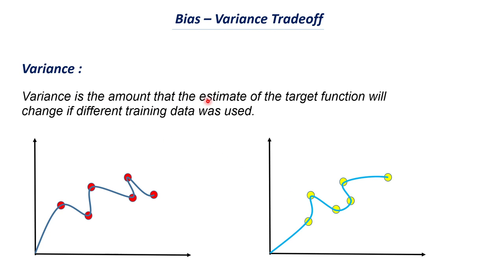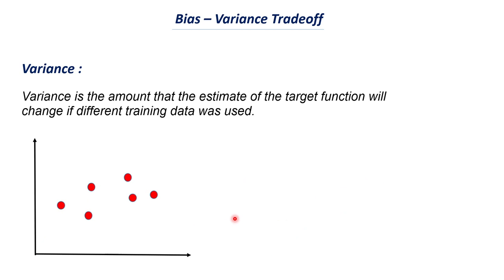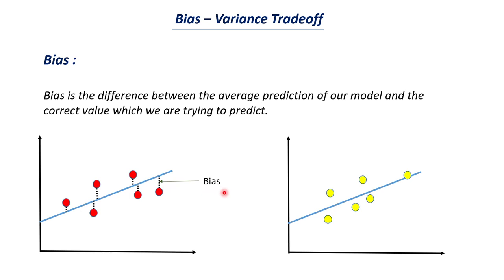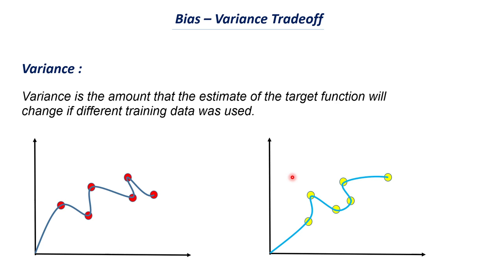Variance is the amount that the target function will change, and if that change is huge we call this high variance. In the previous simple model case, both models were almost similar despite different data — there was high bias but the model touched none of the data points. In the complex model case, we can say there is zero bias because the model touches all the data points with no distance between the data point and the model. So when you use a simple model like a straight line, you will have very high bias but not much variance. When you use a more complex model, the bias will be zero but there will be huge variance.